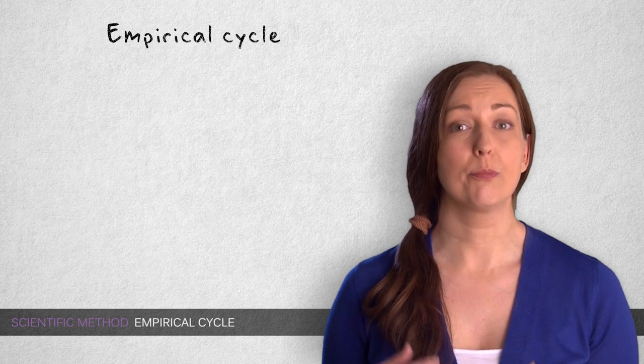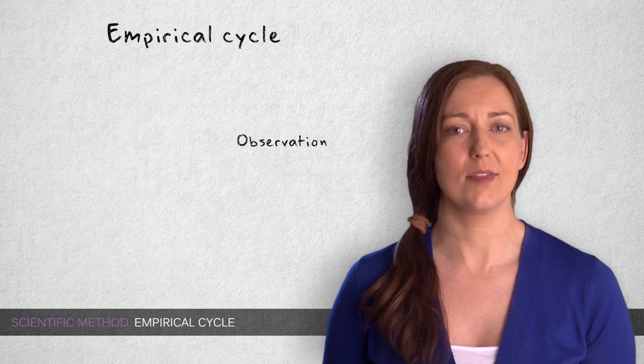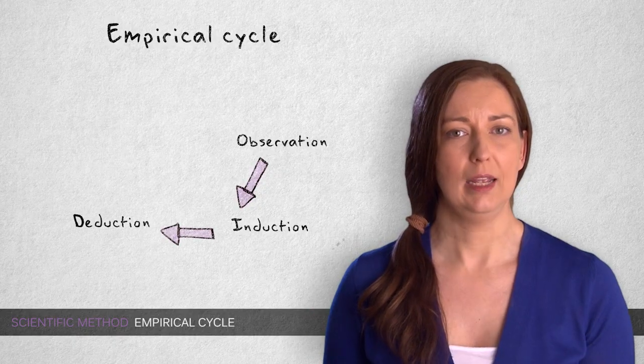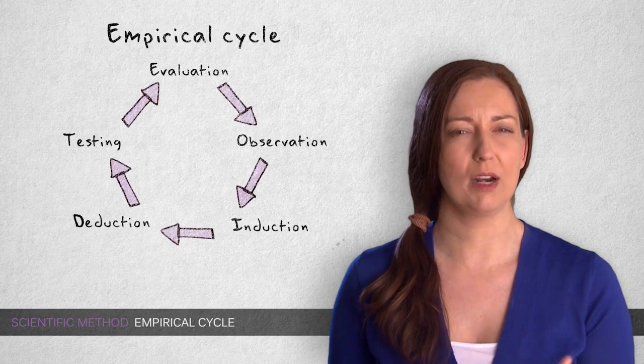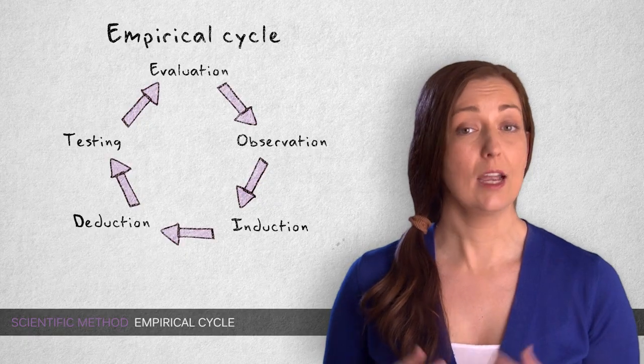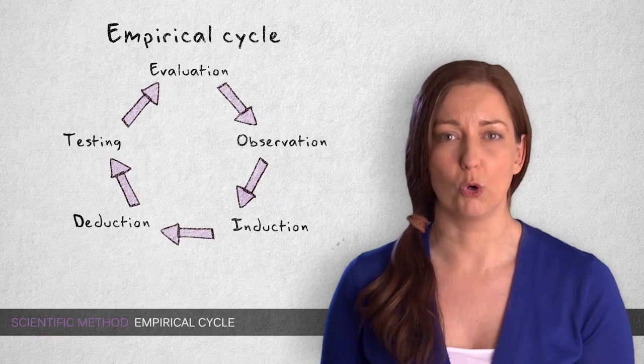The empirical cycle captures the process of coming up with hypotheses about how stuff works and testing these hypotheses against empirical data in a systematic and rigorous way. It characterizes the hypothetical-deductive approach to science.